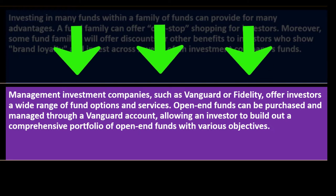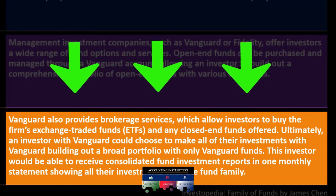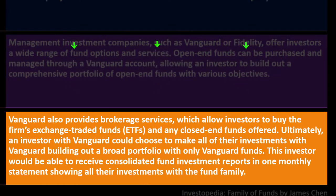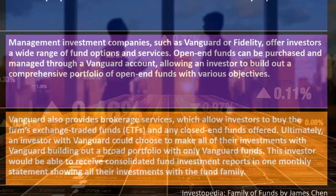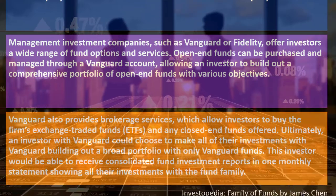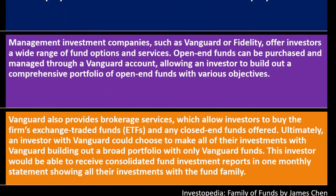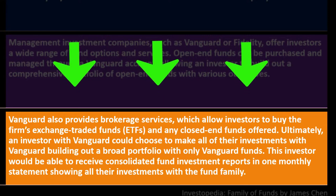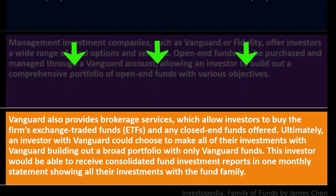Management investment companies such as Vanguard or Fidelity offer investors a wide range of fund options and services. Open-end funds can be purchased and managed through a Vanguard account, allowing an investor to build a comprehensive portfolio. Vanguard also provides brokerage services allowing investors to buy ETFs and any closed-end funds offered. Ultimately, an investor with Vanguard could choose to make all their investments there, building a broad portfolio with only Vanguard funds.